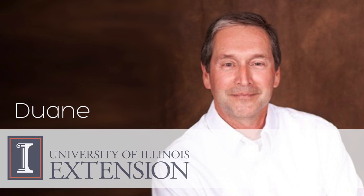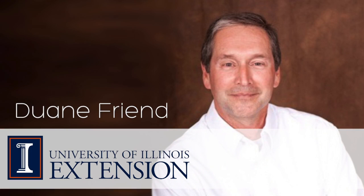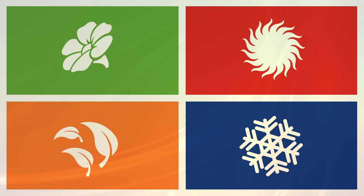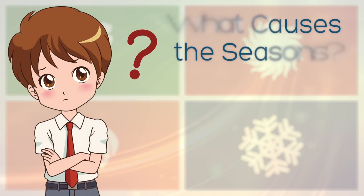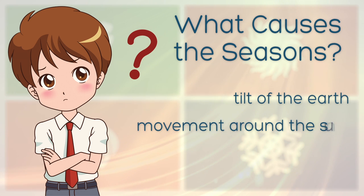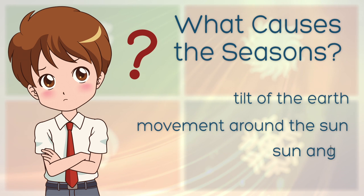Hello, this is Duane Friend with University of Illinois Extension. Spring, Summer, Winter, Fall — much of the Earth experiences the four seasons. What causes this seasonal change? It's mostly due to the tilt of the Earth's axis, the movement of the Earth around the Sun, and this changes how high or low the Sun is in the sky.